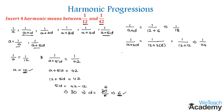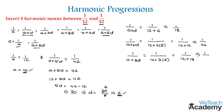Now let us find the fourth term, 1/(a+3d). Substituting the values gives 1/(12 + 3×6) = 1/(12+18) = 1/30. So the fourth term is 1/30.